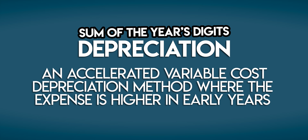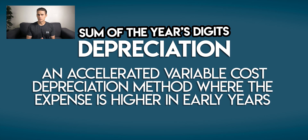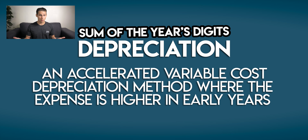Sum of the year's digits depreciation is an accelerated variable cost depreciation method where the expense is higher in early years. If you saw my double declining balance video last week, you might notice that this description hasn't changed — that's because both are accelerated variable cost depreciation methods, but the calculation behind each one is different, as you'll soon see.